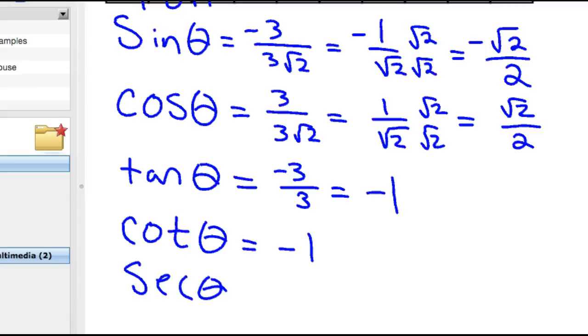Secant theta is the reciprocal of cosine, which was 3 root 2 over 3, which is root 2 if you simplify out the 3s.